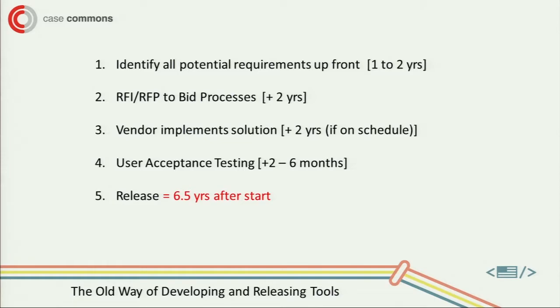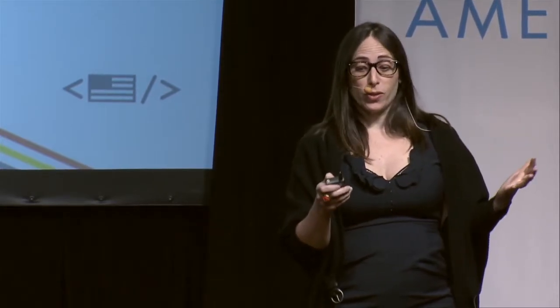The process they have today is: identify all potential requirements up front, spend a year or two writing a thick requirements document, then do an RFI or RFP process to get to bid — that takes about another two years. Vendors implement the solution once selected. The process was designed with control and efficiency in mind, but it almost never leads to that. Users get involved at the very end, and you're releasing about six and a half years after you defined what was going to solve your problems. So it leads to systems like this.